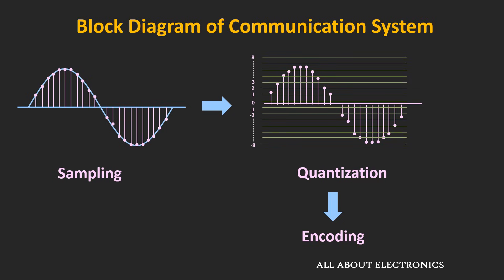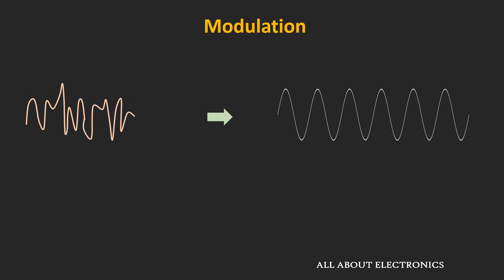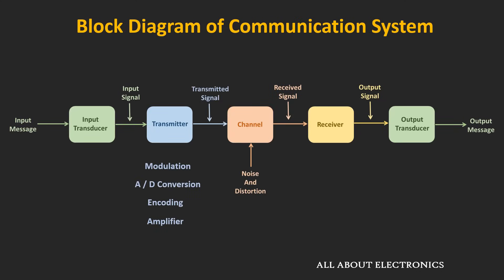Usually, for efficient transmission, the signal is modulated using a particular scheme. Modulation is the process where a property of a periodic signal — like amplitude, phase, or frequency — is altered according to the input signal. In the upcoming videos, we will talk in detail about modulation. These are some of the subsystems of the transmitter module.